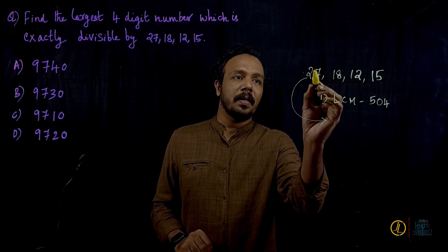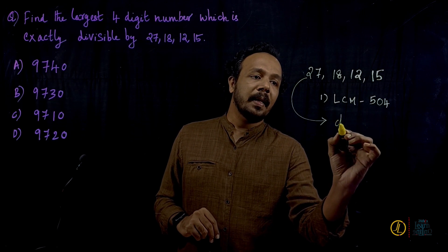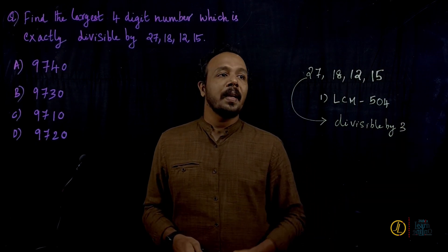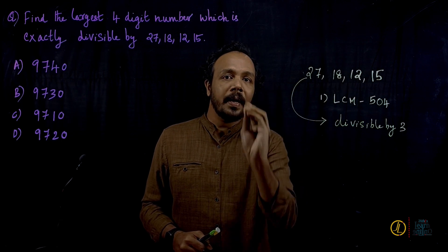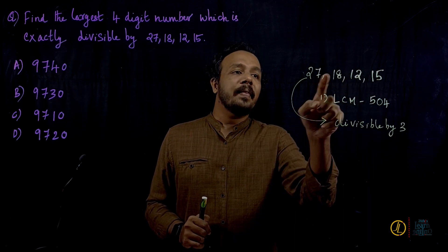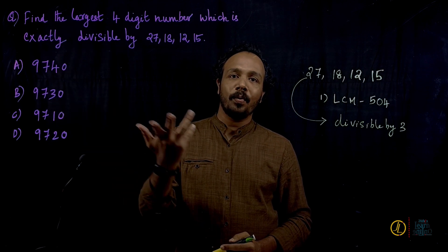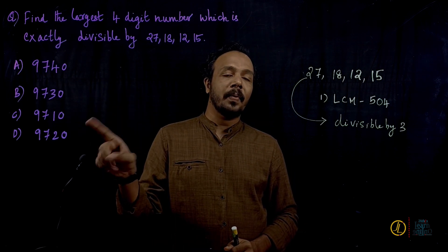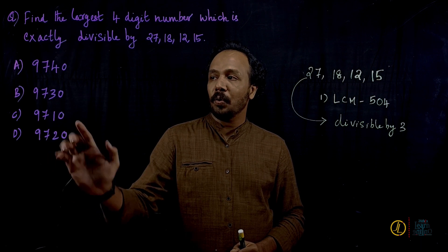We need to divide these numbers. Going through the options: the answer choices are 9740, 9730, 9710, and 9720. We check which one is divisible. The digit sum approach: 3 divides a number only if the digit sum is divisible by 3.